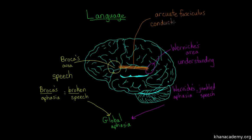When this connection is damaged, people experience something called conduction aphasia. Their ability to conduct information between listening and speaking is disrupted, which makes them unable to repeat things even though they understand what's being said. It's pretty crazy.